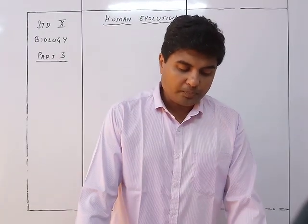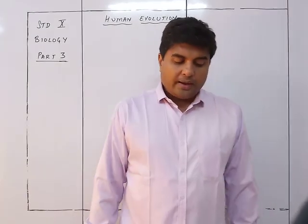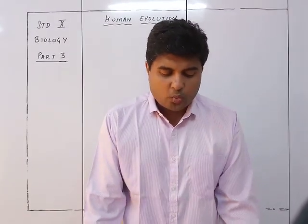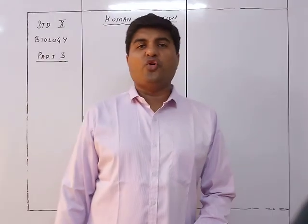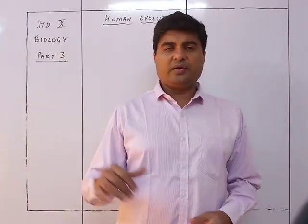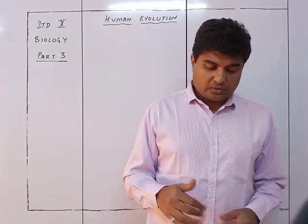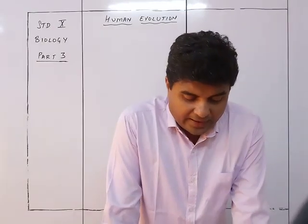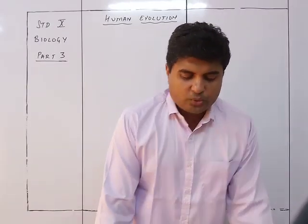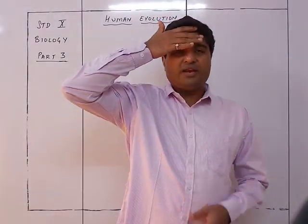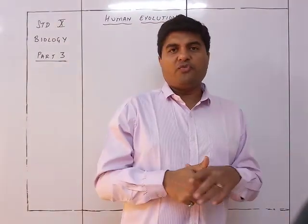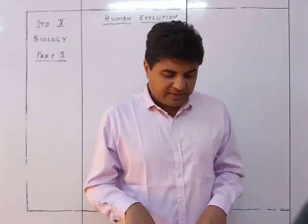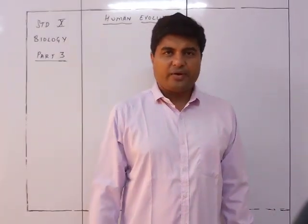We start with Australopithecus. They were small-statured, averaging about 120 cm tall — that is 3.5 to 4 feet tall. They were quite short with a very small stature. Their cranial capacity ranged from 450 to 600 cm³, and they were not having any forehead.